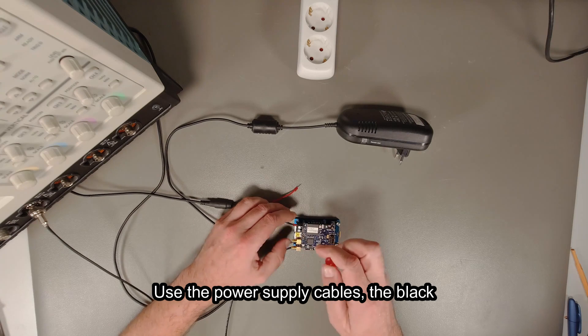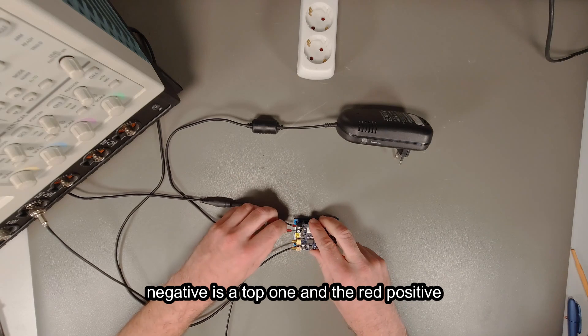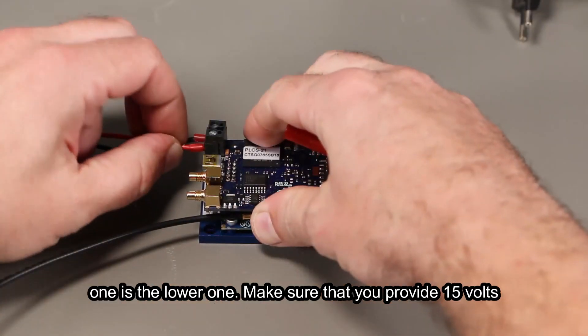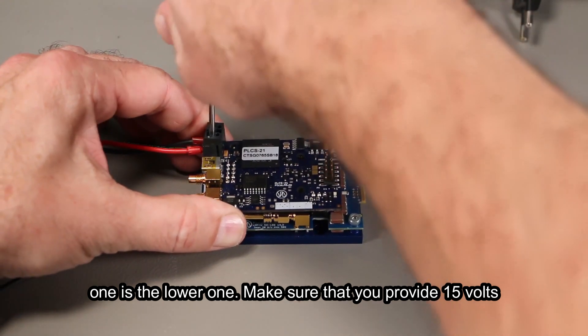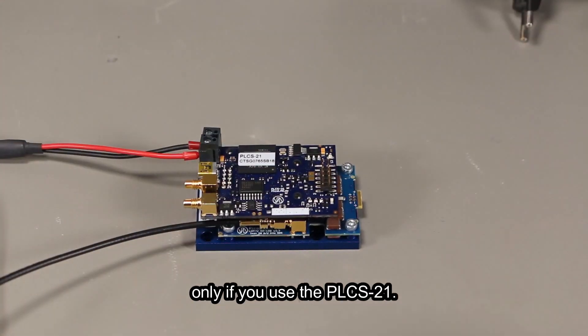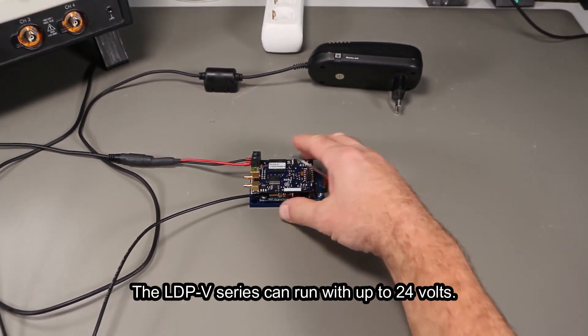Use the power supply cables. The black negative is the top one and the red positive one is the lower one. Make sure that you provide 15 volts only if you use the PLCS21. The LDPV series can run with up to 24 volts.